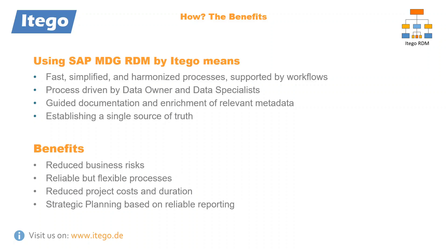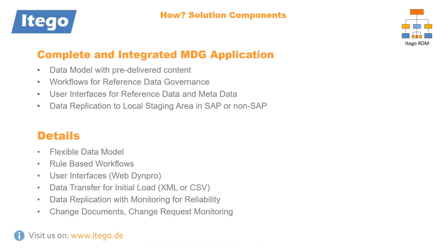We are now going to take a look at what ITEGO delivers with RDM. RDM is a complete and integrated MDG application which simply works as an add-on and out of the box. In order to achieve this functionality, RDM delivers its own data model which contains pre-delivered content but is flexible nevertheless. In addition to this, the out-of-the-box version contains three standard rule-based workflows. If needed, these workflows can be configured or even extended. The workflow is supported by change documents which allow for easy monitoring. The adaptable user interface of RDM allows for easy processing of all reference data affairs. Lastly, the data replication of RDM works via a staging area in a connected system, which works for both SAP and non-SAP systems. Another method of data exchange from or to RDM is provided by the possibility of transferring data via XML or CSV files.